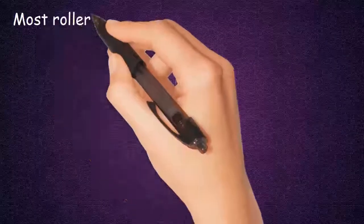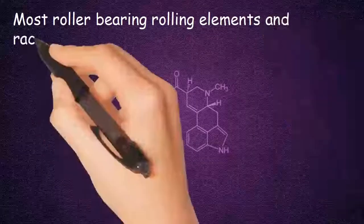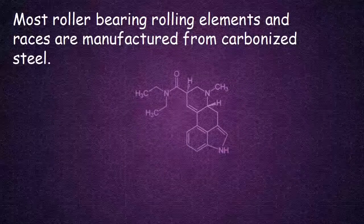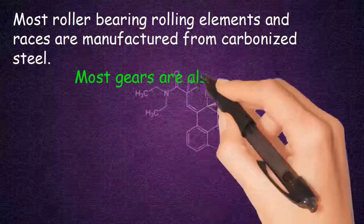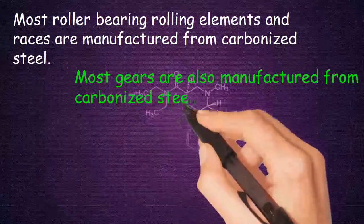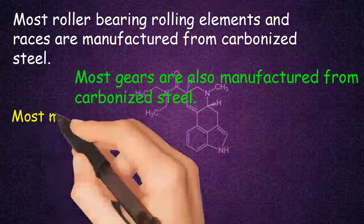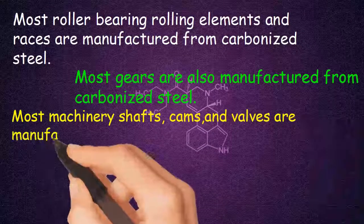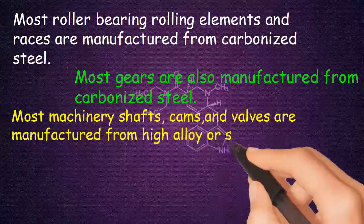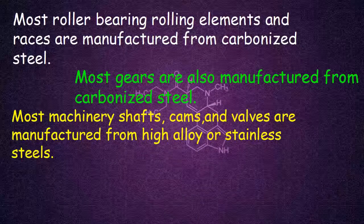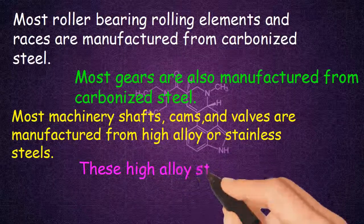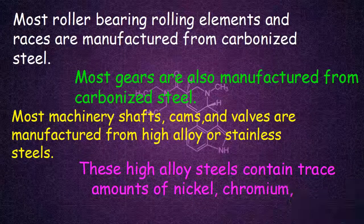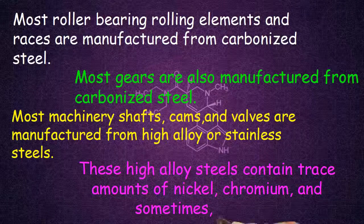Most roller bearing rolling elements and races are manufactured from carbonized steel. Most gears are also manufactured from carbonized steel. Most machinery shafts, cams, and valves are manufactured from high alloy or stainless steels. These high alloy steels contain trace amounts of nickel, chromium, and sometimes titanium.